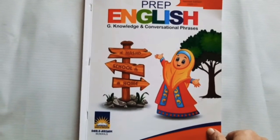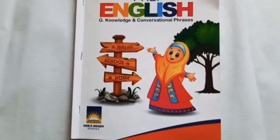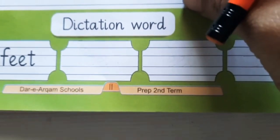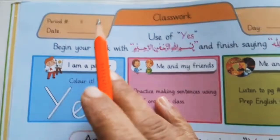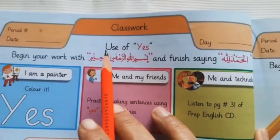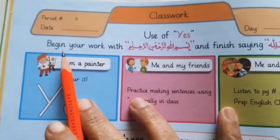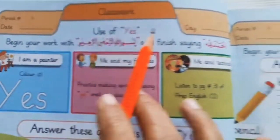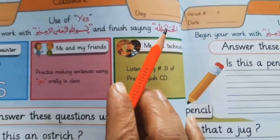Today our class is about English verbs. Open your book. Open page number 11. First we have to write the date. Use of 'yes'. Begin your work with Bismillahir rahmanir raheem and finish saying Alhamdulillah.